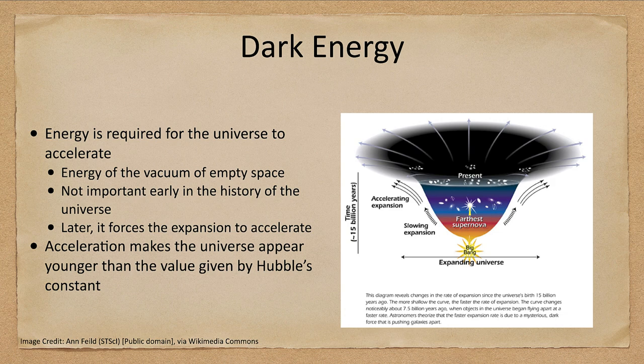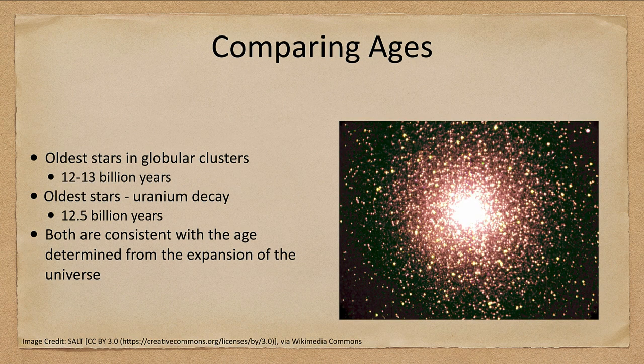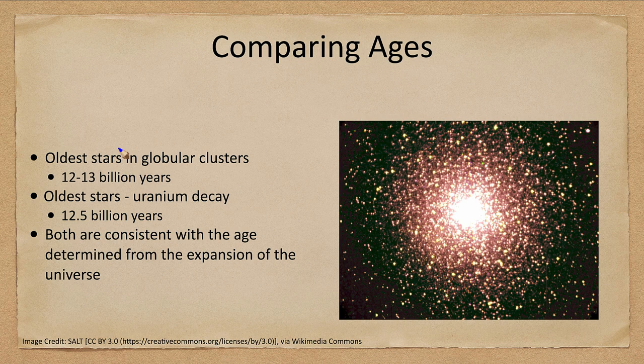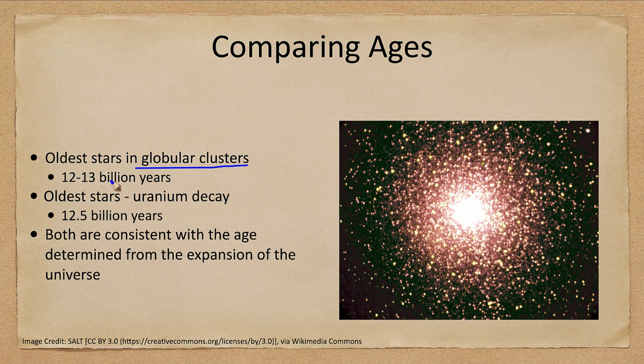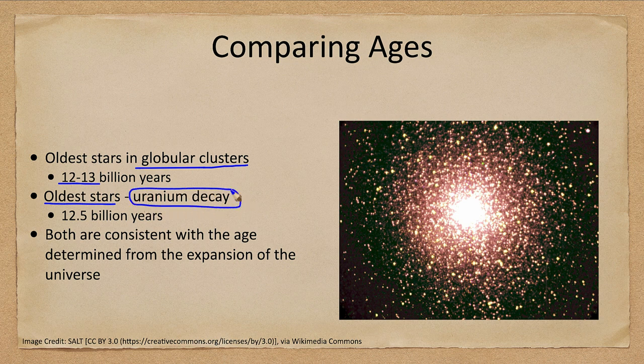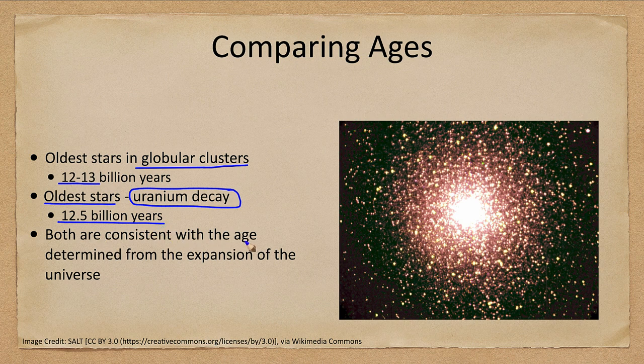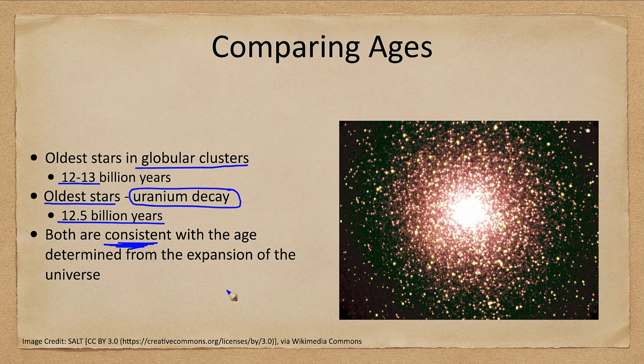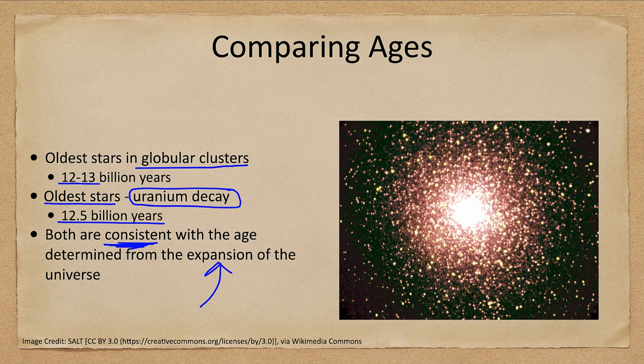So how can we figure out the age of the universe? There's a few things we can look at. We can look at stars in globular clusters. Remember, these were some of the first things to form after the Big Bang, and they are 12 to 13 billion years old. We can look at some of the oldest stars we find. And based on decay of uranium, we find that they're about 12 and a half billion years old. Both of these are consistent with the age determined from the expansion. So we're not finding anything that is really out of whack here. We can come up with an age of the universe of very close to 14 billion years.